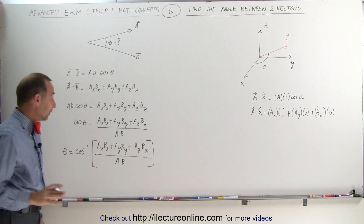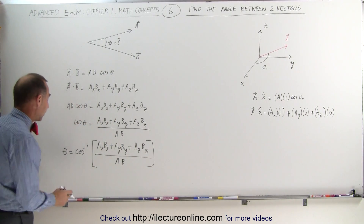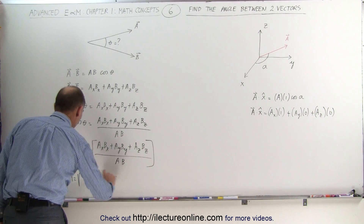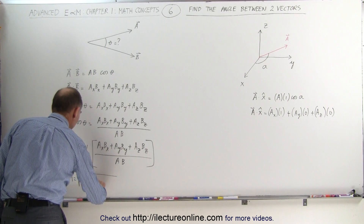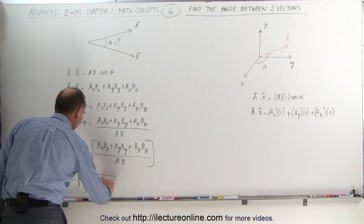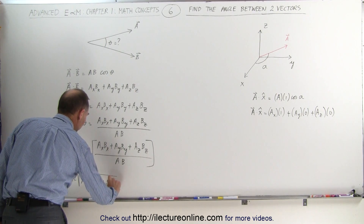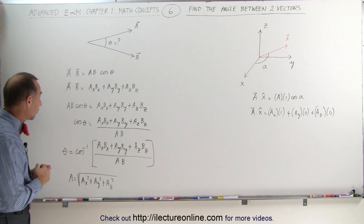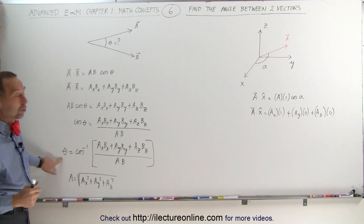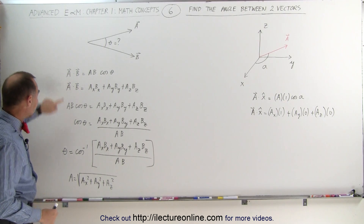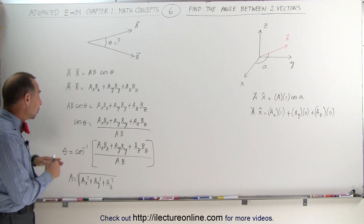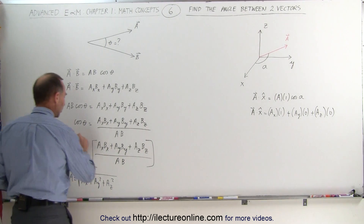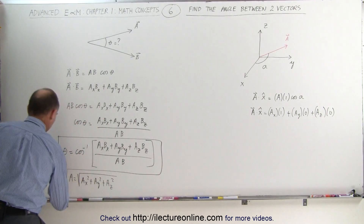And of course, remember that the magnitude of any of these vectors can be found. For example, the magnitude of A can be found by simply taking the square root of the x-component squared plus the y-component squared plus the z-component squared, and exactly the same for the B vector as well. Here you can see that it's easy using the dot product or scalar product to find the angle between any two vectors using this equation — and let's go ahead and box it, because it's such a nice equation.